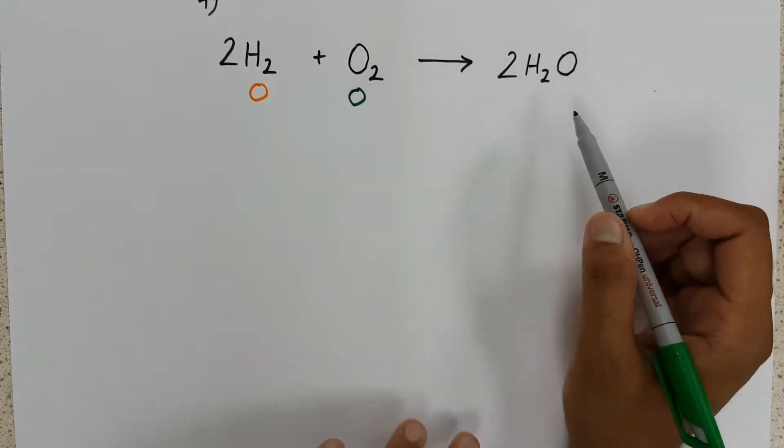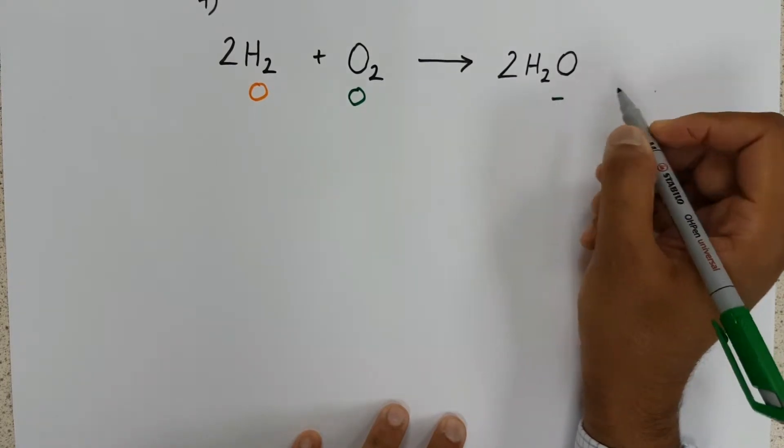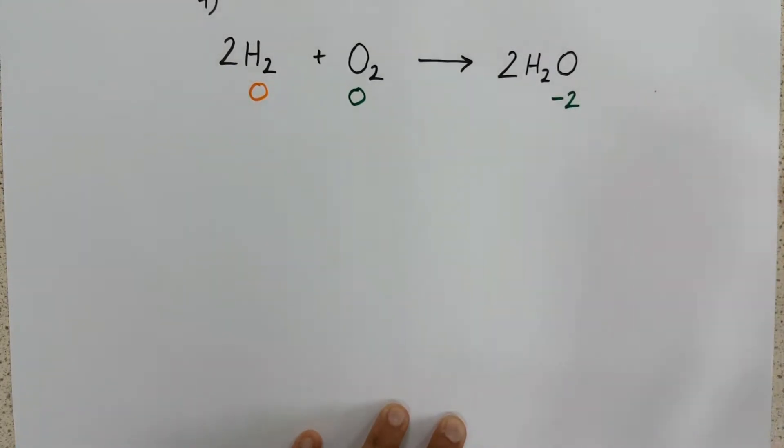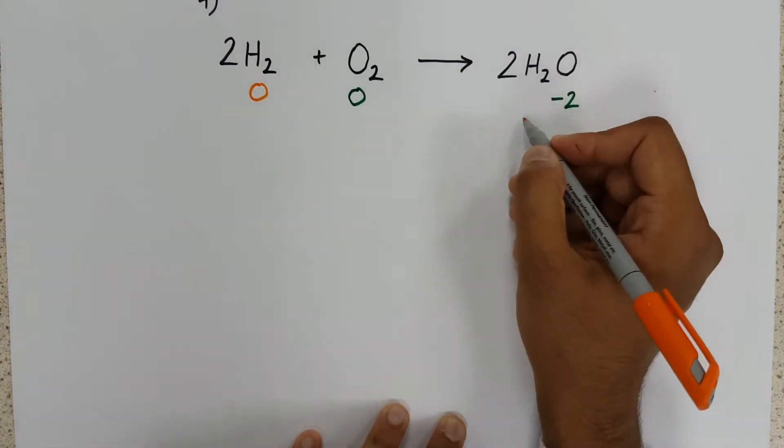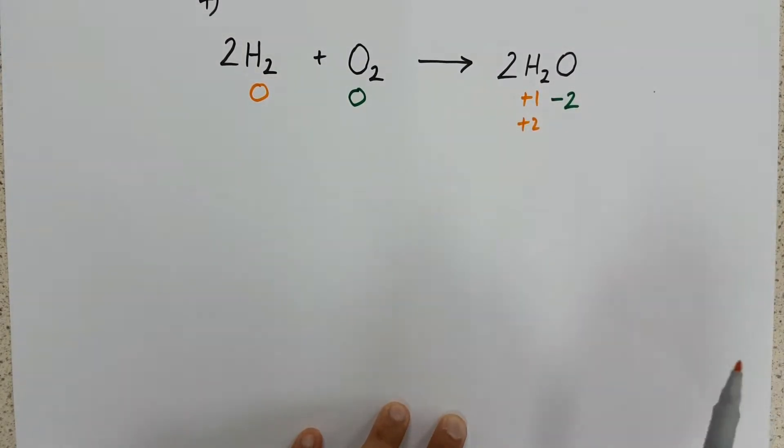Now, in H₂O, oxygen is a group six, therefore its charge or its oxidation state is minus two. Hydrogen, we already know, is plus one.